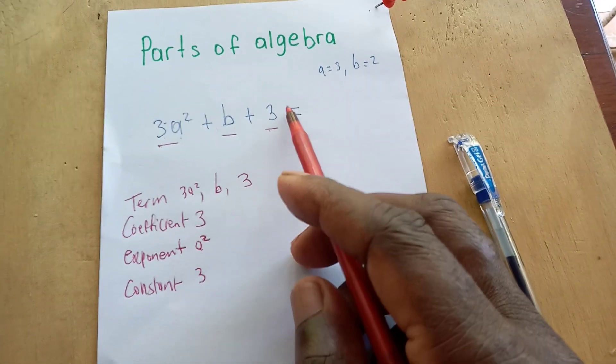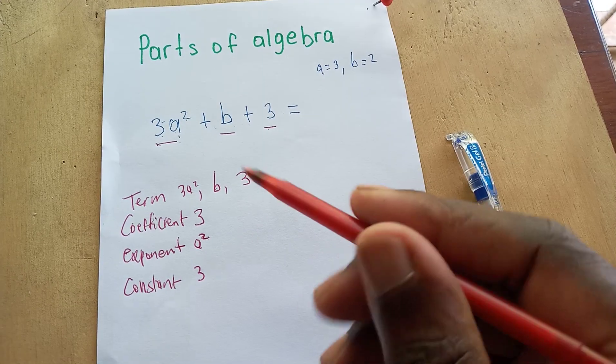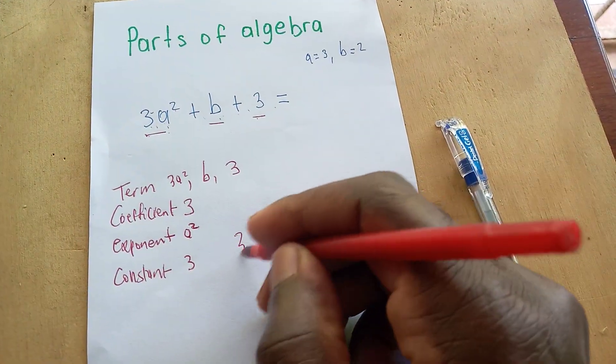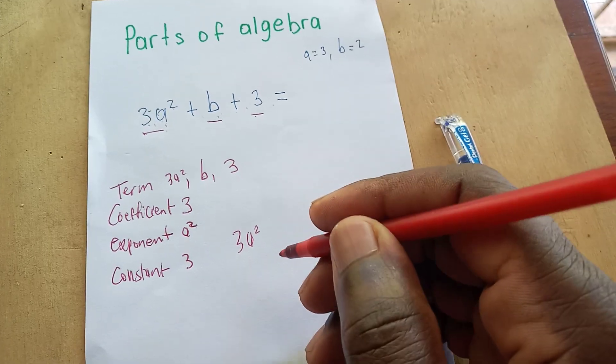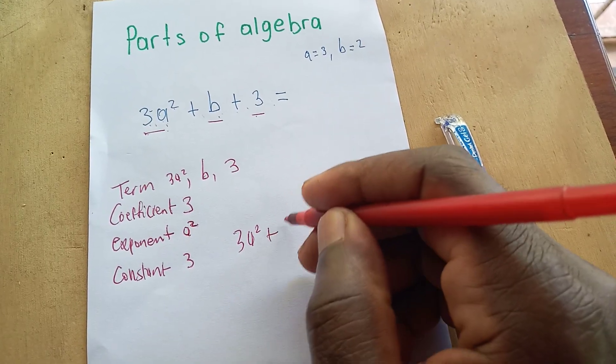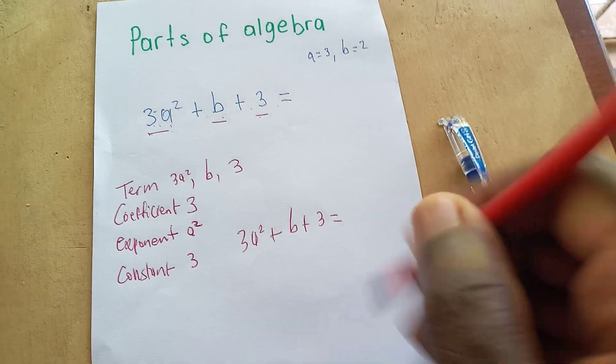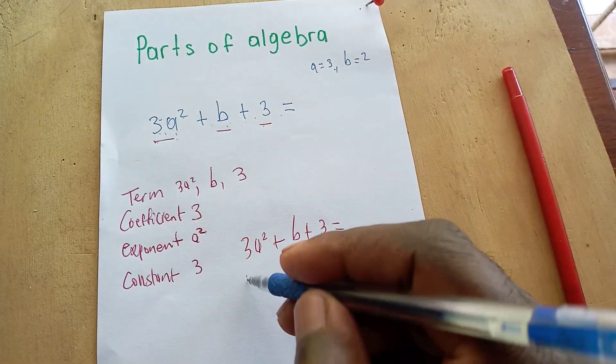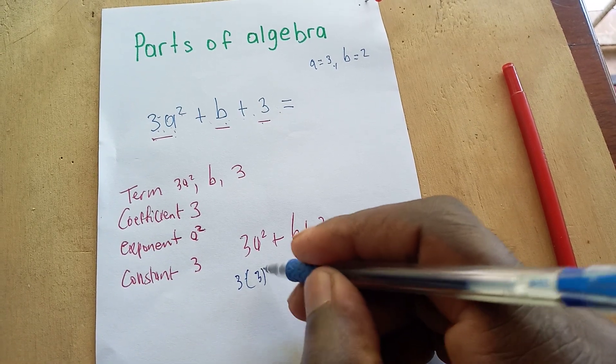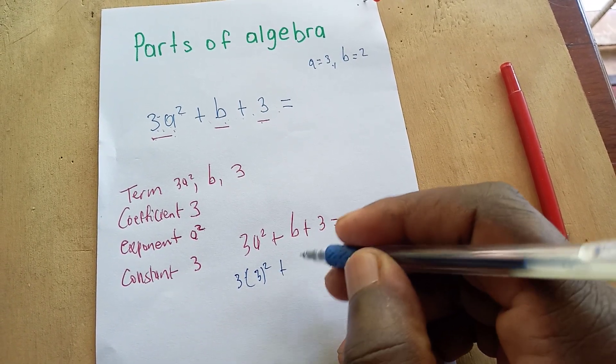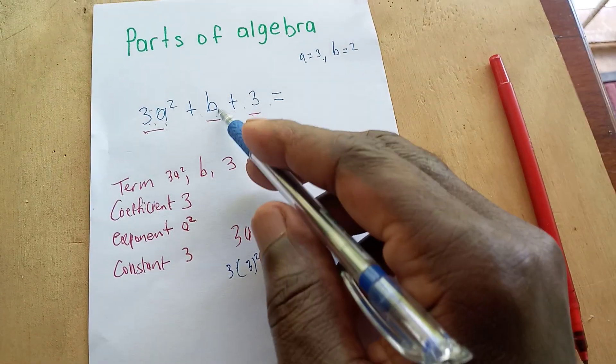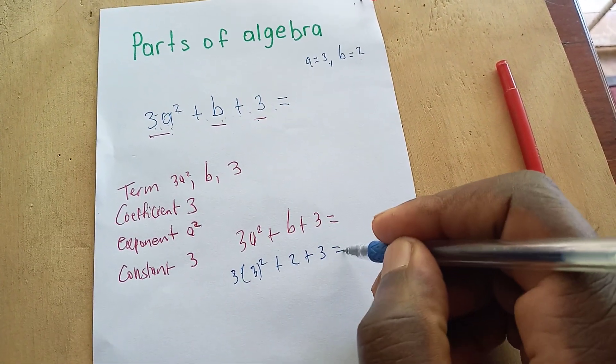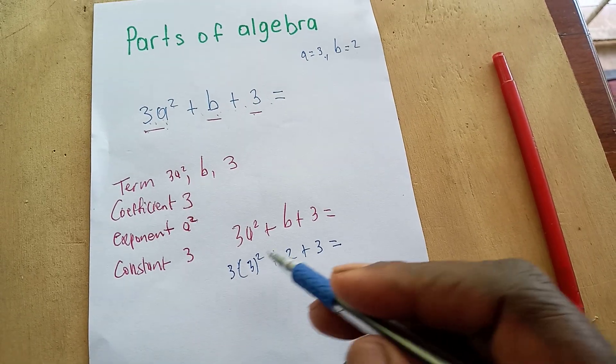Let's see if we can do this together before we end our time together. 3a² + b + 3 equals what? We say a is what? 3. So we have 3² plus, and b is what? B is going to be 2, so 2 plus 3 equals.